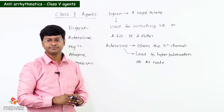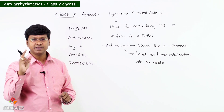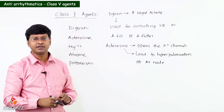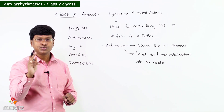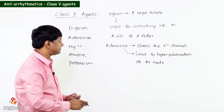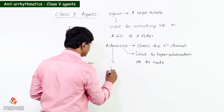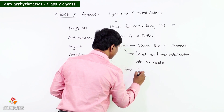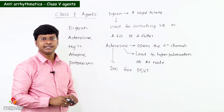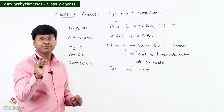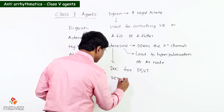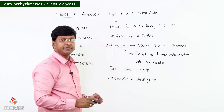Once the AV node is inhibited, impulses from the atria will not reach the ventricle, and thereby adenosine is used as the drug of choice for the treatment of paroxysmal supraventricular tachycardia (PSVT).